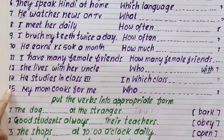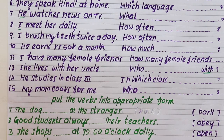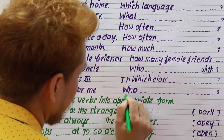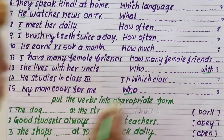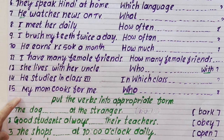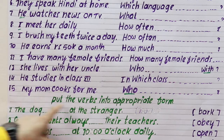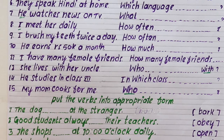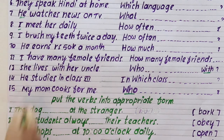She lives with her uncle. Who does she live with? He studies in class 12. In which class does he study? My mom cooks for me. Who cooks for you? — When 'who' is the subject, we don't use do or does. Who cooks for you? My mother cooks for me.